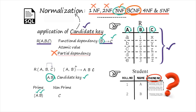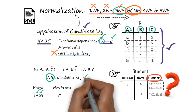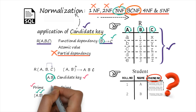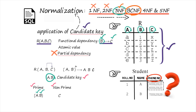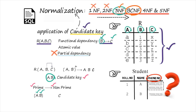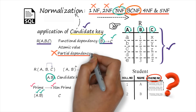Quick recap: to find partial dependency, first find the candidate key — in our case AB. Second, find prime and non-prime attributes. Prime attribute means part of the candidate key, so A and B are prime attributes and C is non-prime. Third, check the definition of partial dependency: if a prime attribute determines any non-prime attribute. In our case, prime attribute B determines non-prime attribute C. So partial dependency exists and this table is not in 2NF.